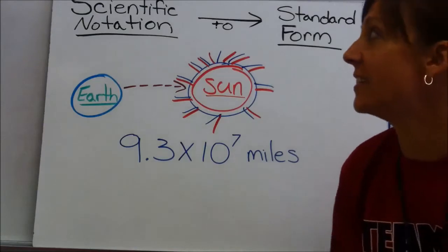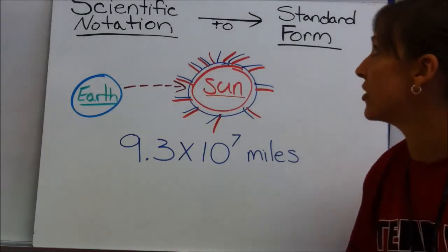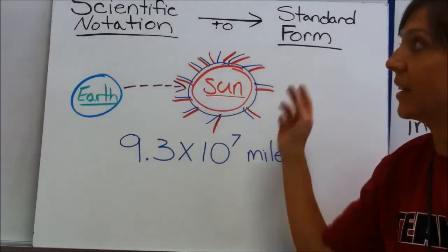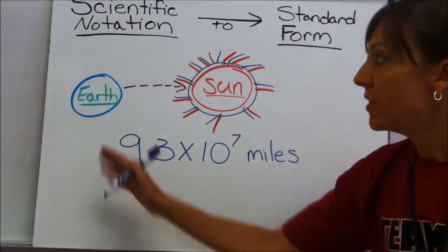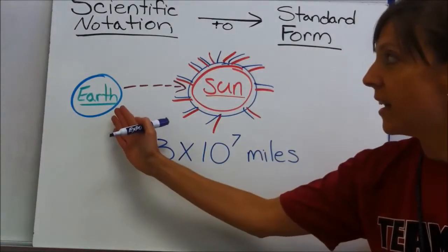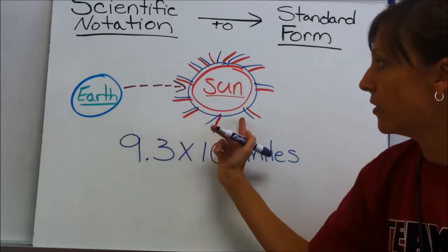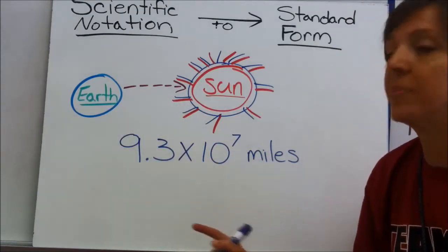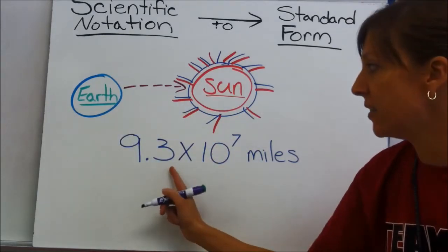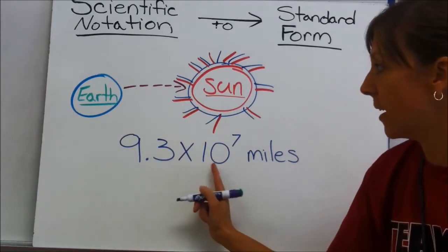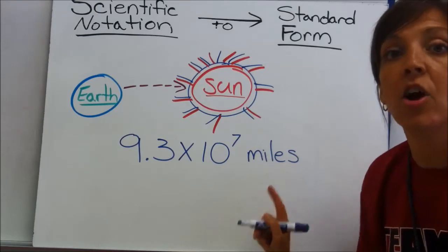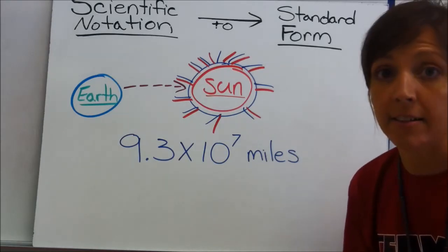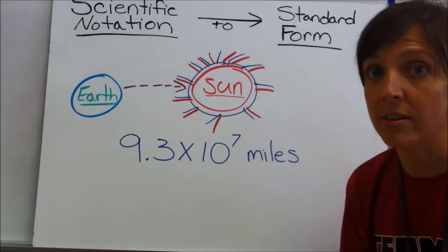Today we're going to learn Scientific Notation to Standard Form. The distance of the Earth to the Sun is 9 and 3 tenths times 10 to the 7th miles, written in Scientific Notation.